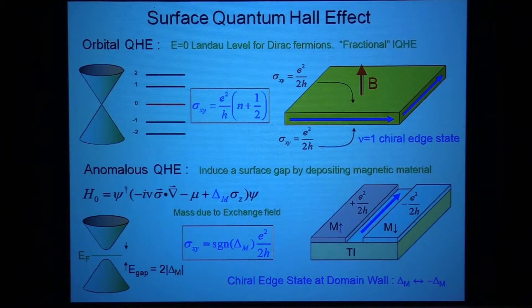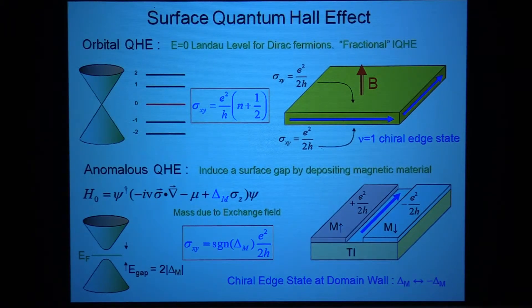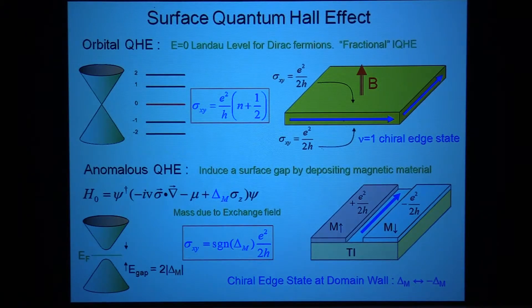Let's talk about the simplest case first: breaking time reversal symmetry by adding a perpendicular magnetic field, taking us back to the integer quantum Hall effect problem. A good homework problem, if you've never done it, is to calculate the Landau-level spectrum for Dirac electrons. It's almost the same as the classic Landau-level problem in a parabolic band structure — you take the Dirac Hamiltonian, square it, it becomes quadratic, and then you can do the same calculation as before.